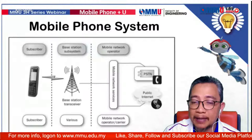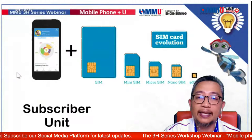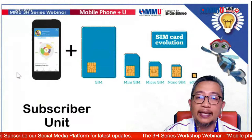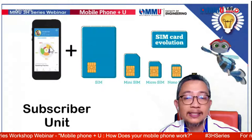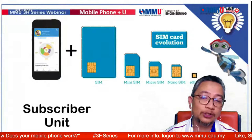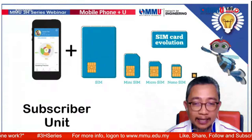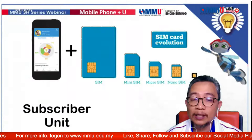The subscriber unit — where you and I are — consists of two parts: the phone itself and the SIM card. These two are separate and independent. That's why you can buy a phone without a SIM card, or have a SIM card and choose a different phone later. If you want to change phones, you don't need to change your number — just move your SIM card to the new phone.